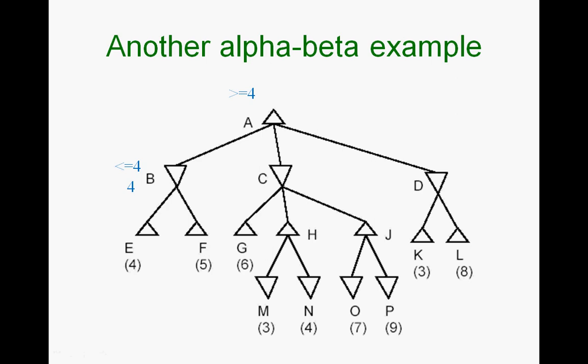Since A can get at least a 4 from here, it will only be greater than or equal to 4. Anything else has to be better than 4 for it to take that. Now you have greater than or equal to 4. Depth-first search continues, comes to G, finds G equals 6, so C gets less than or equal to 6.